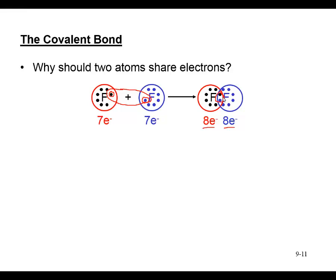Both fluorines in diatomic F2 are stabilized because they are treated as having a full valence shell with an electron configuration like neon. This is why the diatomic elements — hydrogen, nitrogen, oxygen, fluorine, chlorine, bromine, and iodine — all have stability in packets of two, fulfilling their octet or duet rules with a complete valence shell.